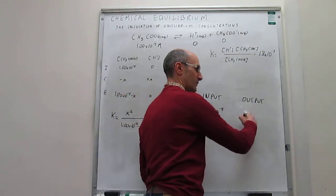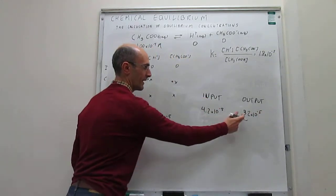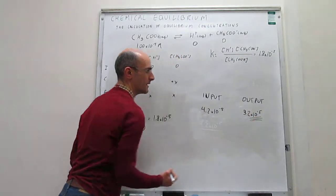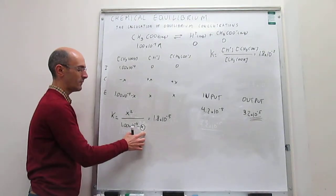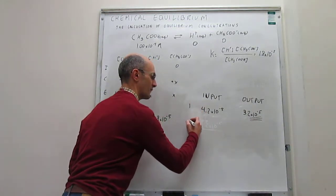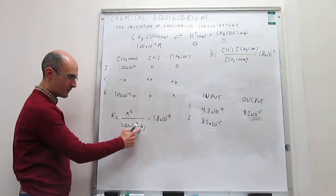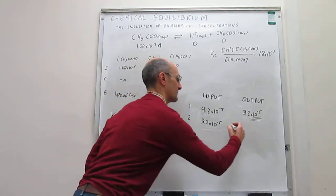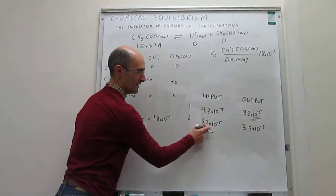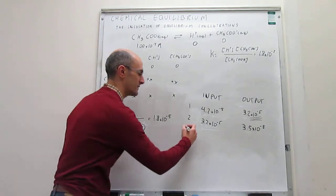In the first iteration, we plug our initial guess of 4.2×10⁻⁵ into the denominator and solve for x, obtaining an output of 3.2×10⁻⁵. This does not match the input, so we proceed to the second iteration: plug 3.2×10⁻⁵ into the denominator and solve again, getting 3.5×10⁻⁵. The numbers are not the same but are becoming closer, which means we are converging to the actual solution.